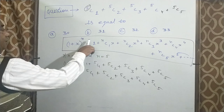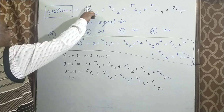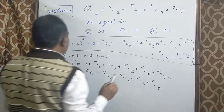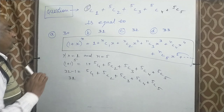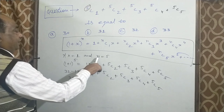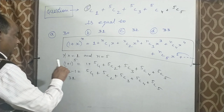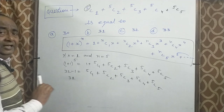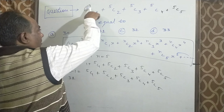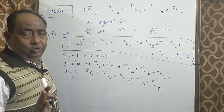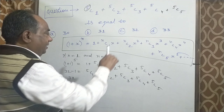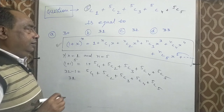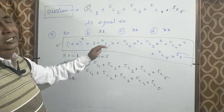इसी तरह यदि N 10 आ जाए तो 10 तक जाएगा, X की value 1 रखेंगे, N की value 10 रख देंगे, तो answer 2 की power 10 minus 1 होगा। यह binomial theorem से formula learn करना होगा।